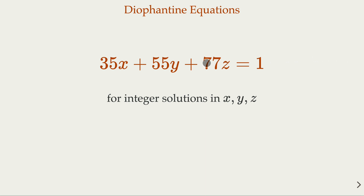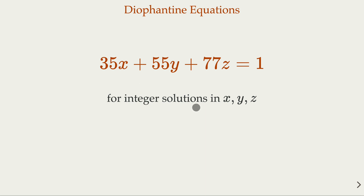We're going to look at linear Diophantine equations with multiple variables — in this case three variables x, y, z. We're going to use this particular example to explain different methods that we can use to solve this sort of problem. Here, x, y, z are integers.